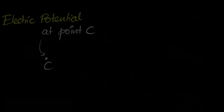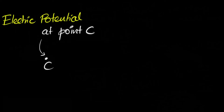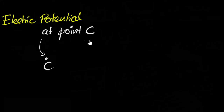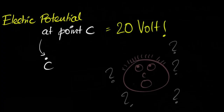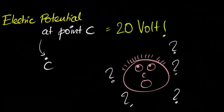When you're walking on a street, let's say somebody comes to you and says, 'Hey, electric potential at some point in space, let's call it point C, is 20 volts.' What is the meaning of that statement? What would it mean?